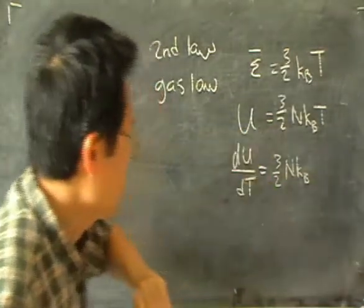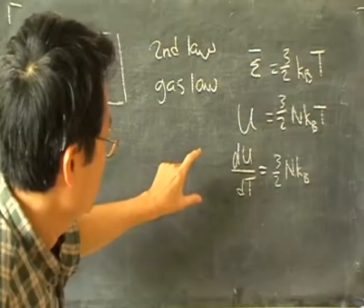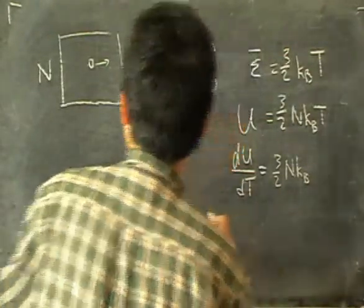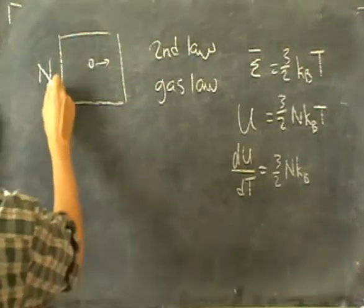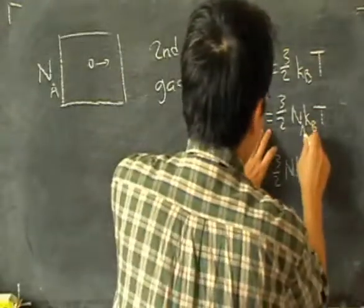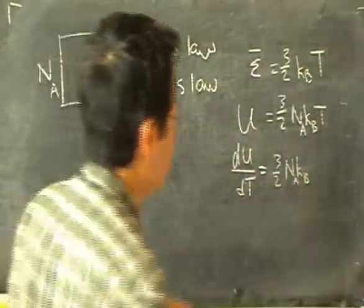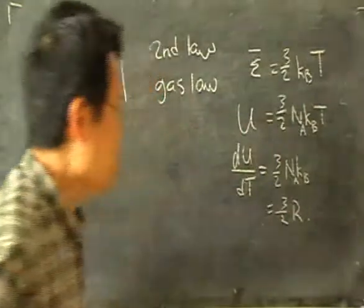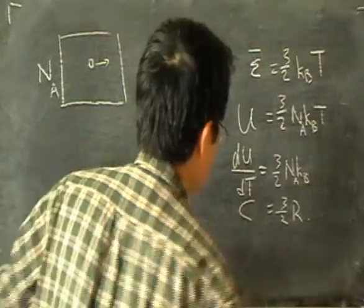So this is an expression that we will try to derive. To put it in a more familiar form: if the number of particles is one mole, then n_A times k_B, the Boltzmann constant, is the gas constant R. So the heat capacity becomes 3/2 R. That might be a more familiar expression, and this is the heat capacity.